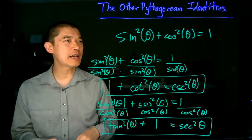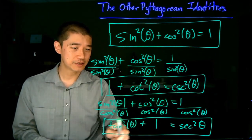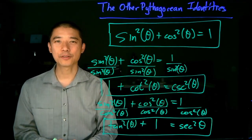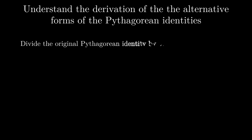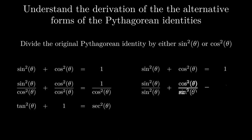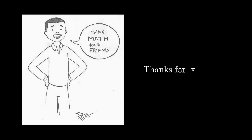One of the nice features of this is that we now have relationships by pairs for all six trig functions: sine and cosine, tangent and secant, cotangent and cosecant. These are the three versions of the Pythagorean identity.